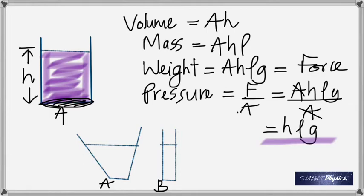The pressure exerted by a liquid depends only on the height and its density. Whether the container is wide, narrow, or slanted, as long as the vertical height of the liquid is the same, the pressure at the bottom is the same. The pressure does not depend on the size or shape of the container.